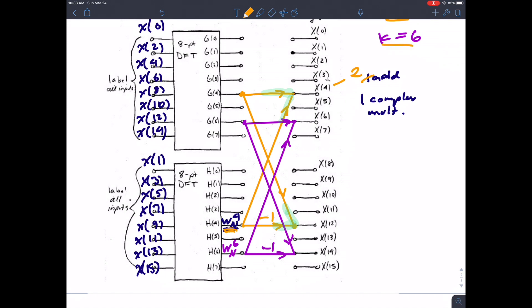So if I look at k equals 6 I come to the exact same conclusion. I have two adds, one complex multiply.